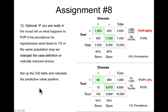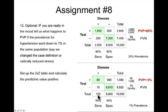Problem 12, which was optional, takes the previous problem and changes the prevalence to 1% in the same population with the same test characteristics of sensitivity and specificity, and asks us to set up the 2x2 table and calculate the predictive value positive. As with the last table, there are 10,000 total people being tested. With 1% prevalence, we have only 100 people who have disease, leaving 9,900 without disease. The test is 90% sensitive, so there are 90 true positives.